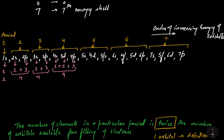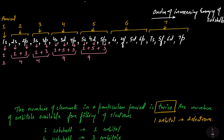In period number five, we have 5s (one orbital), 4d (five orbitals), and 5p (three orbitals) — so 1 + 5 + 3 = nine orbitals in the fifth period. For the sixth period, we have 6s (one orbital), 4f (F subshell, seven orbitals), 5d (five orbitals), and 6p (three orbitals). So 1 + 7 + 5 + 3 = 16 orbitals in the sixth period. For the seventh period, we have 7s (one orbital), 5f (seven orbitals), 6d (five orbitals), and 7p (three orbitals). So 1 + 7 + 5 + 3 = 16 orbitals getting filled in period number seven.